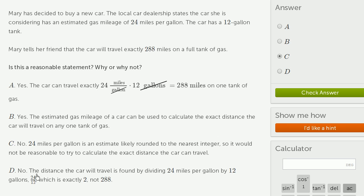So let's just read D. No, the distance the car will travel is found by dividing 24 miles per gallon by 12 gallons. No, this is just wrong, this is wrong mathematically, and this is just troublesome on a lot of levels. So C is the right answer, D is the wrongest, the most wrong of all the answers here.